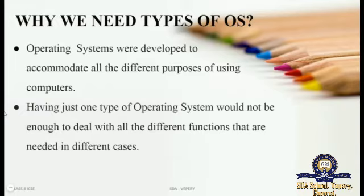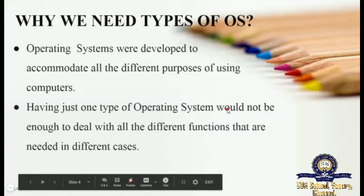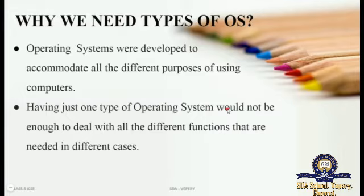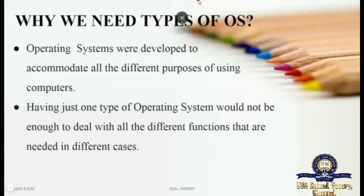Having just one type of operating system is not enough at all. To do multiple functions, to do multiple programs in different situations, we need the types of operating system. For each and every functionality we need a different type of operating system. The same operating system cannot satisfy all the functionalities in the computer. For multiple programs or functions in different situations, we need types of operating system.